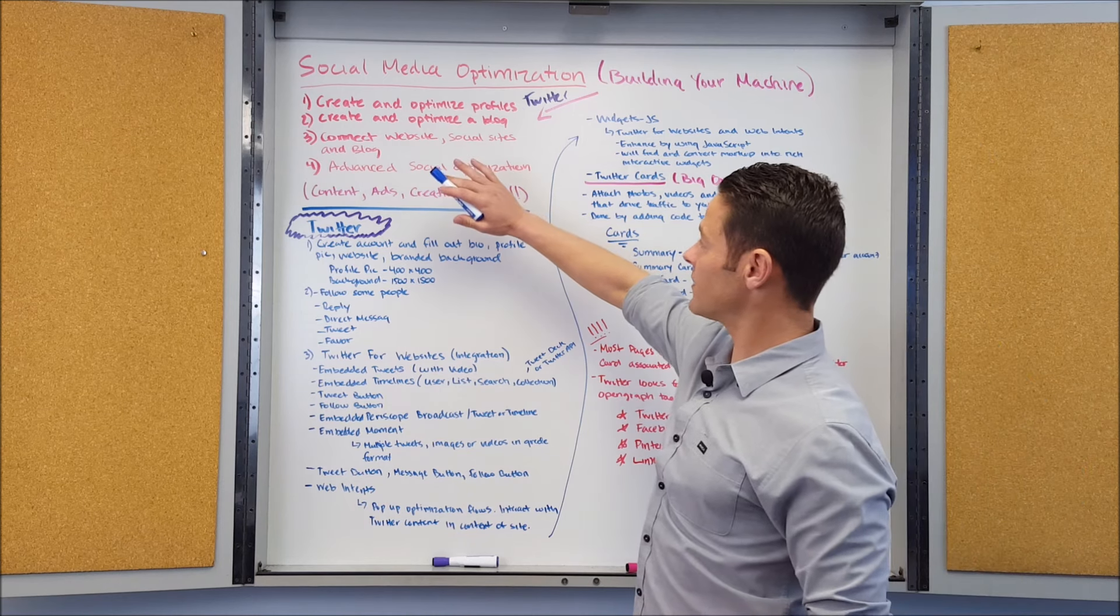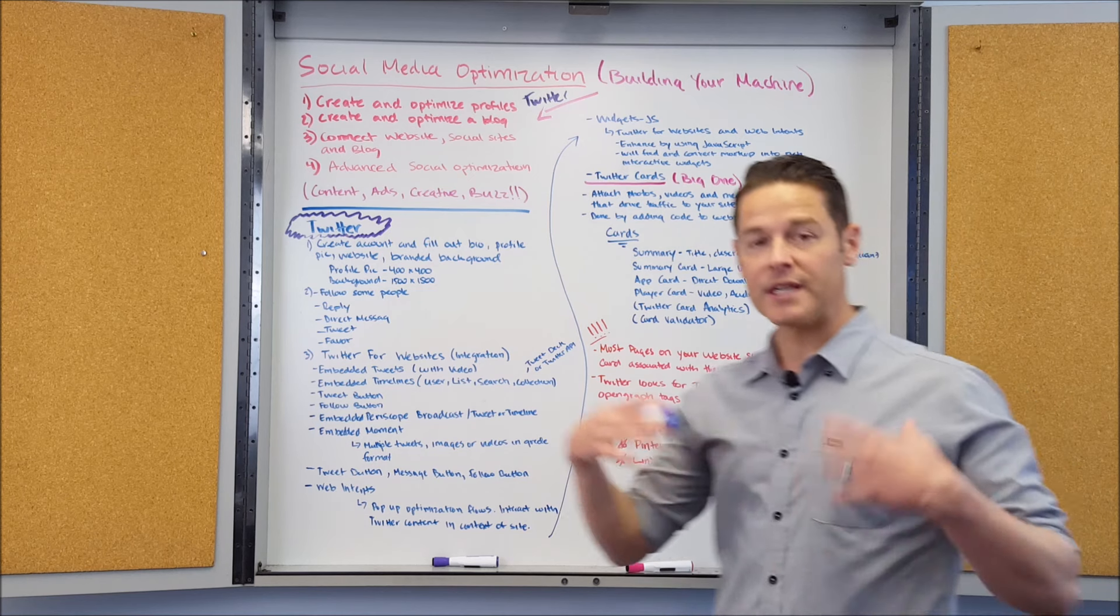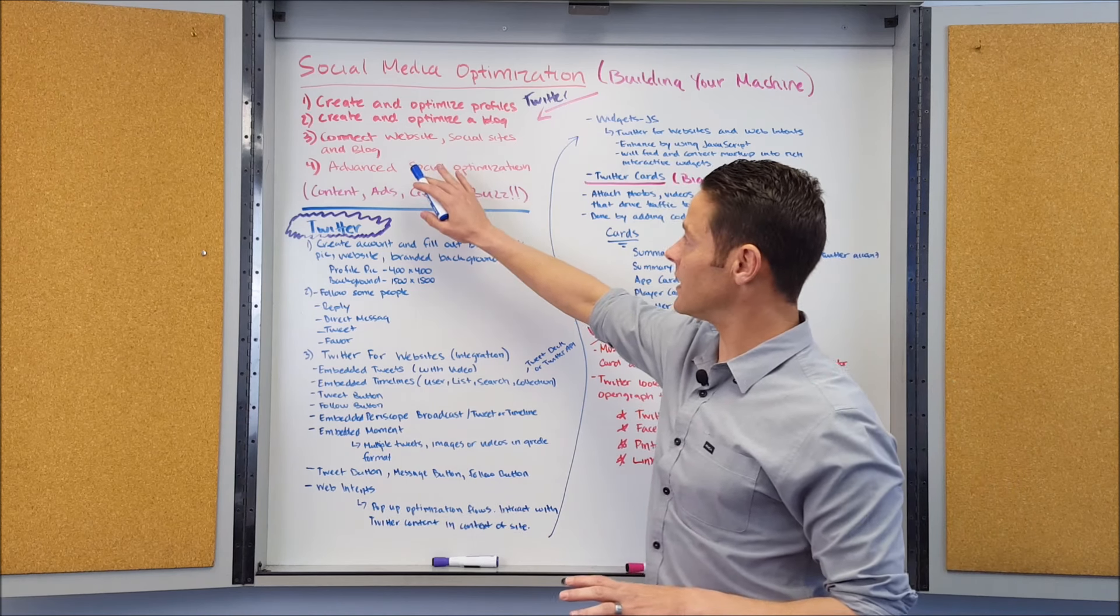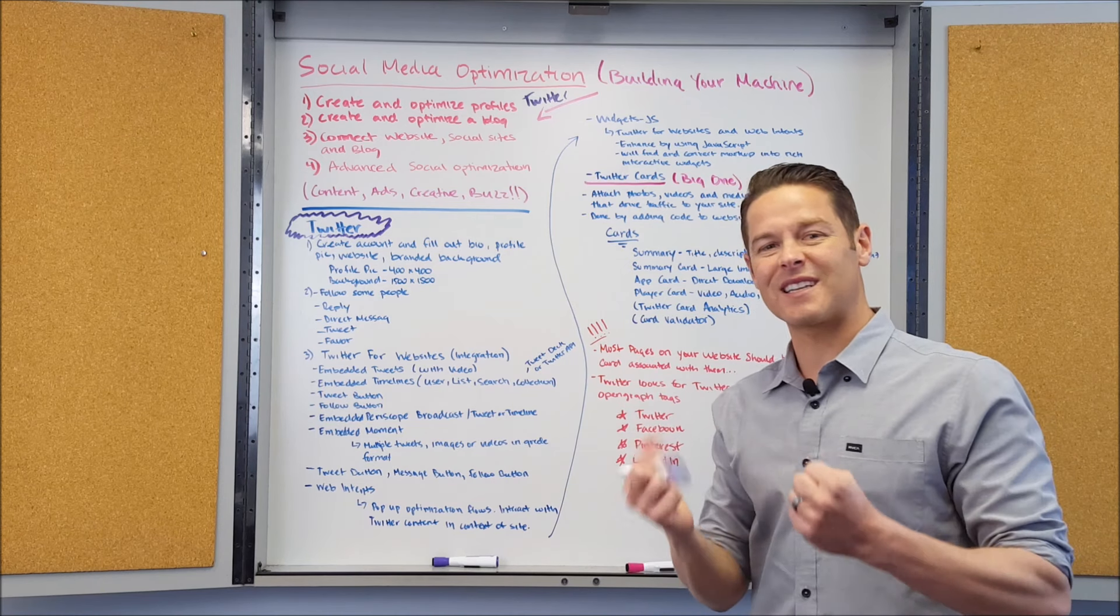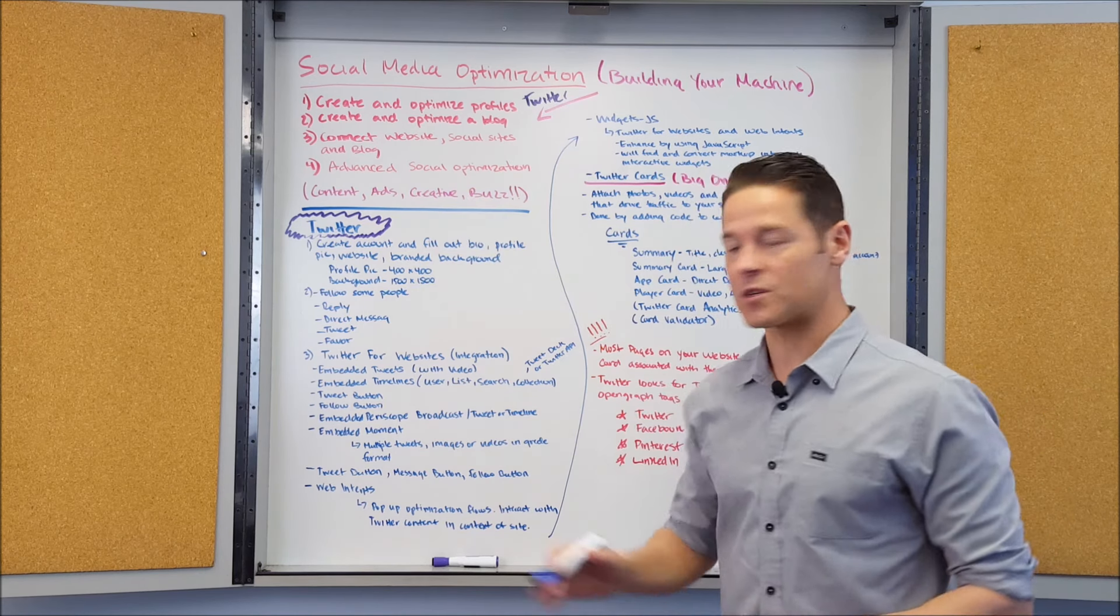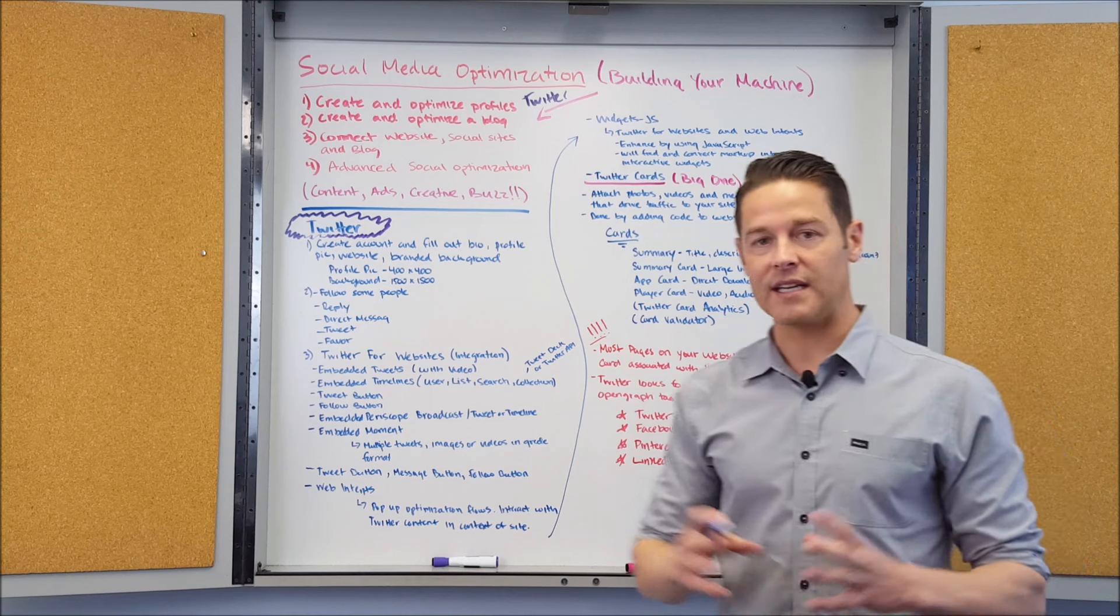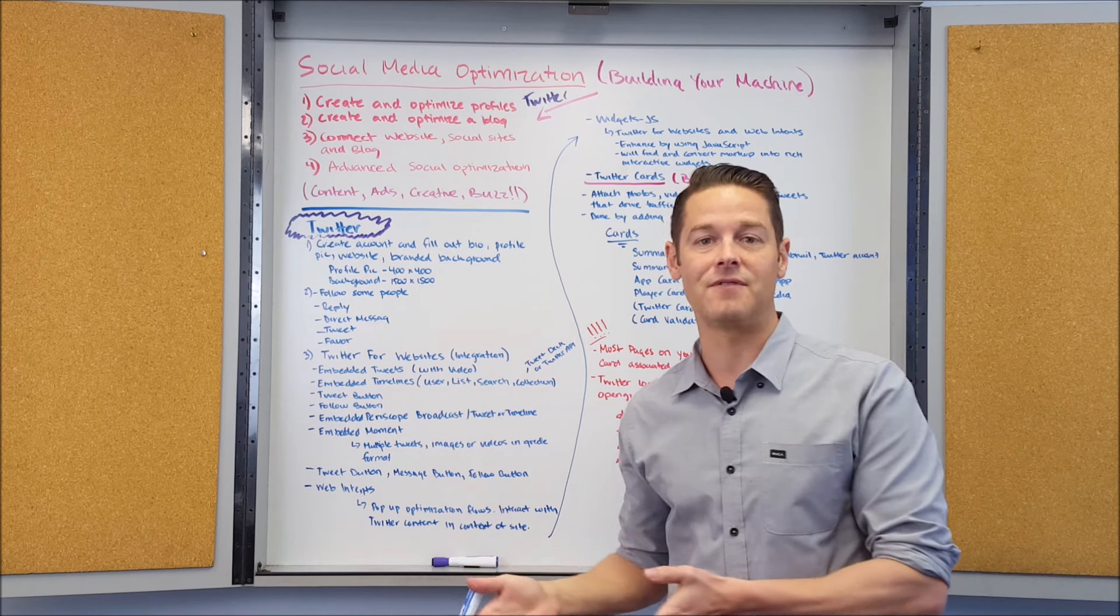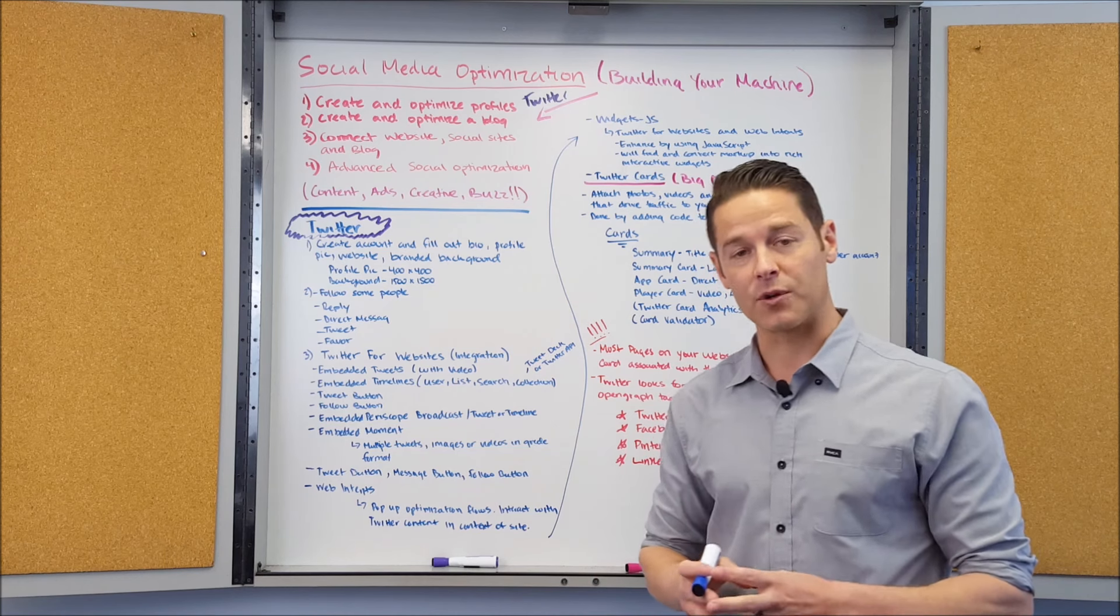First with Twitter and in general with social media optimization, you're looking to create and optimize profiles, create and optimize a blog, connect your website, social sites, and your blog all together so you've got this cohesive machine. Then you'll be getting into advanced social media optimization, bringing all these things together with content, ads, creative, and generating a buzz online. This is actually a model that I'm going to talk about throughout these series of videos—how you make this social media machine something that drives revenue and leads for your business.